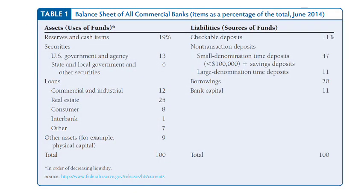Here is an example of the balance sheet of commercial banks in the USA in 2014, showing the percentage of each asset and liability item. On the liabilities side, checkable deposits represent 11%, and non-transaction deposits represent 47% — the most important being large denomination deposits at 11%.